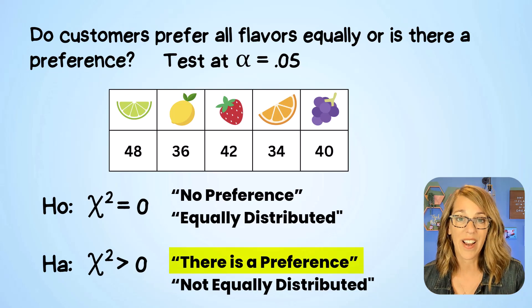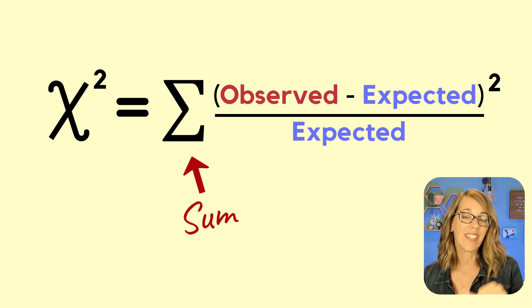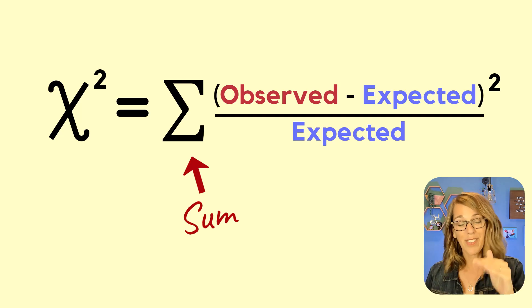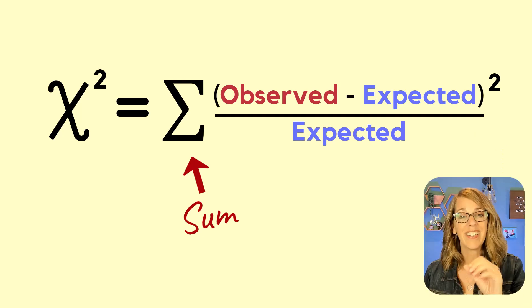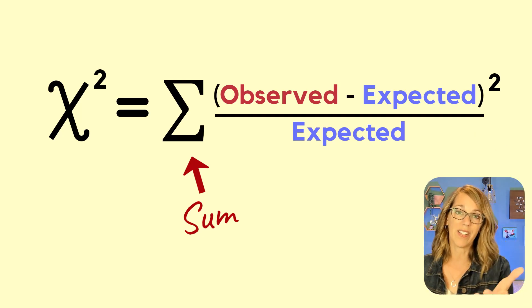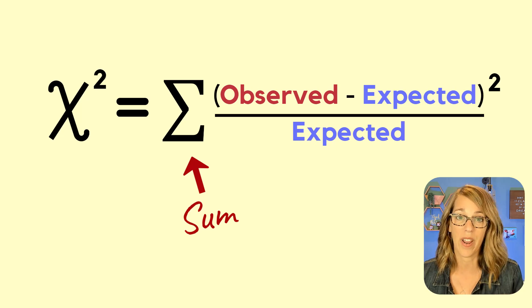But what is chi-square? Chi-square is the sum of the observed values minus their expected value squared divided by expected. We are not going to do this calculation by hand. Instead, I want you to think of this as our relative difference or our chi-square difference.